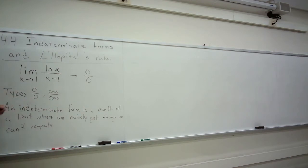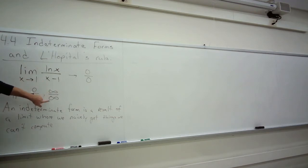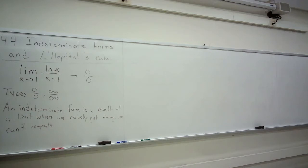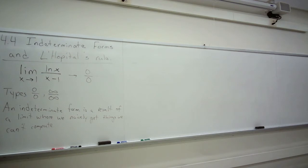Our first two types are division by zero when we have zero up top, and the next type is an infinity value divided by another infinity value. The other indeterminate forms we'll look at today include: zero times infinity, infinity minus infinity, zero to the infinity, infinity to the zero, and one to the infinity. Those are all the types. We're calling these types of indeterminate forms, where you might be able to apply a trick called L'Hôpital's rule and get something out.